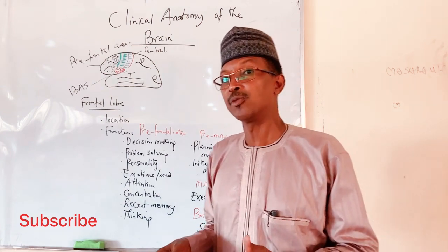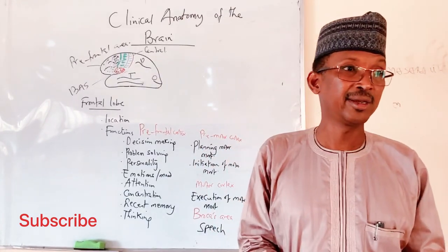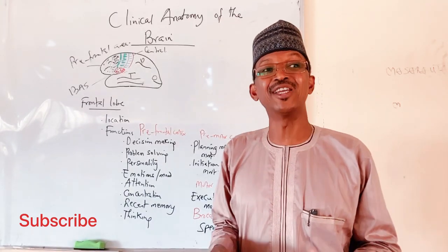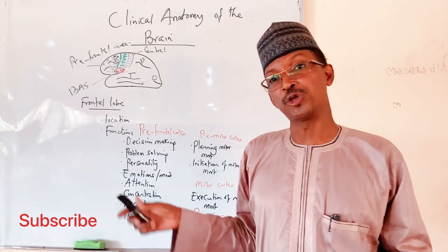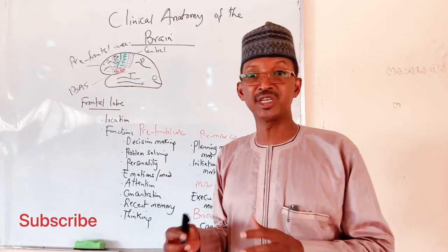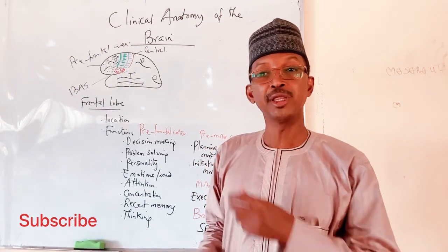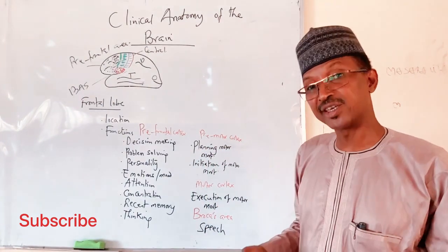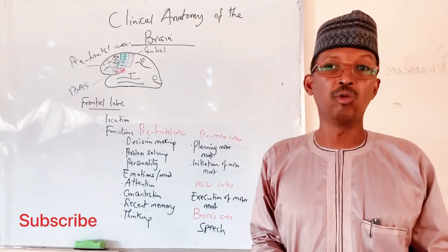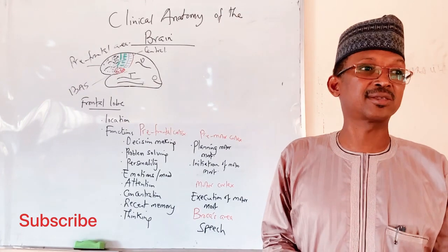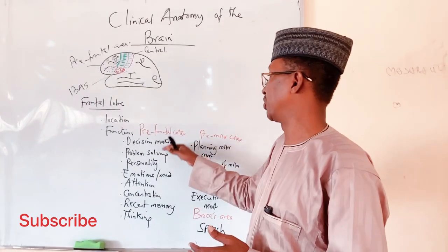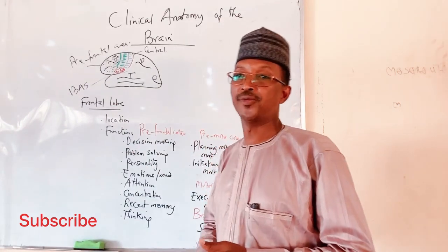Recent memory is also a function of the prefrontal area. For example, remembering what happened yesterday, last month, or last year. But remembering events from 10 or 20 years back is not a prefrontal function — that belongs to other areas discussed later. Thinking — such as planning to go for Hajj this year — is also part of the functions of the prefrontal cortex.